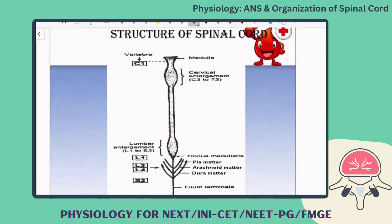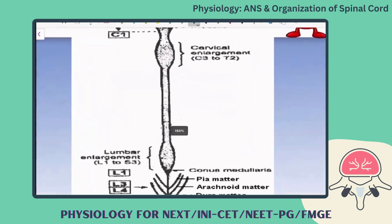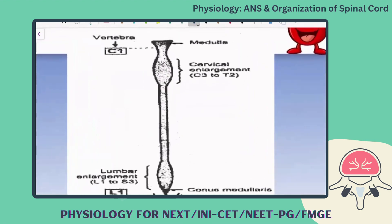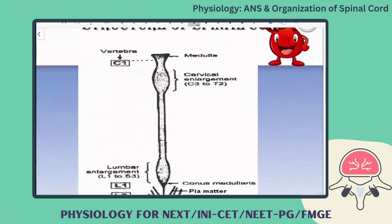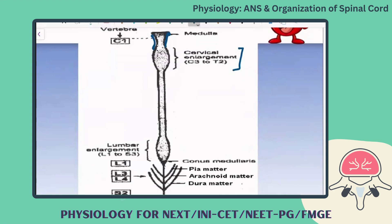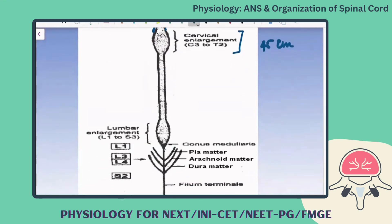Now the structure of the spinal cord - this is a simple hand-drawn representation. The spinal cord comes out through the foramen magnum from the brain; whatever structure comes from the medulla through the foramen magnum emerges into the vertebral column as the spinal cord. There is an enlargement between C3 to T2 called the cervical enlargement. The length of the spinal cord is 45 centimeters.